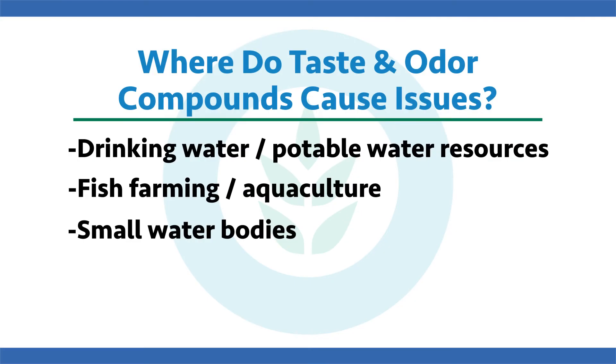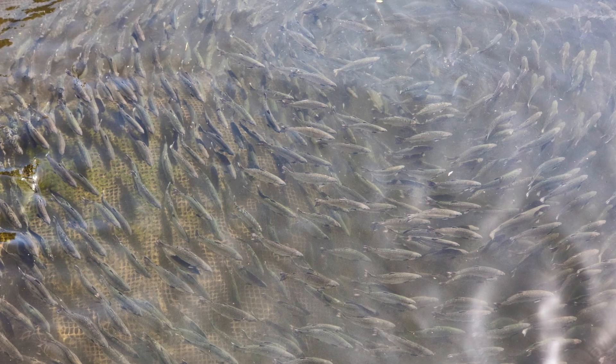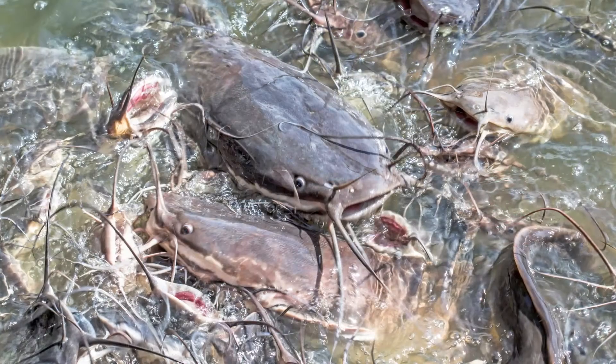The next category is aquaculture. The biggest issue here is that algal taste and odor compounds build up in the flesh of what you're trying to grow — shrimp, salmon, and catfish are very big industries. If algal blooms producing taste and odor compounds occur in those systems, it can really negatively impact the quality of the product. No one wants to eat a dirty, musty-smelling fish fillet. Cyanobacteria are the biggest culprits in aquaculture systems, mainly producing MIB and geosmin, which build up in fish tissue and make it something no one wants to buy or eat.